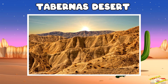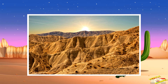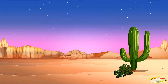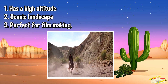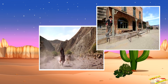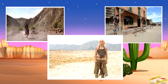Next is the Tabernas Desert, also called Desierto de Tabernas in Spanish. The high altitude of the region and the scenic landscape of this desert has been beneficial for filmmaking. Many western-style movies, as well as one scene in the Game of Thrones series, have been filmed in the Tabernas.